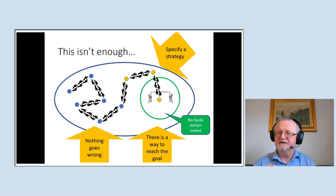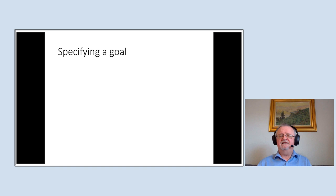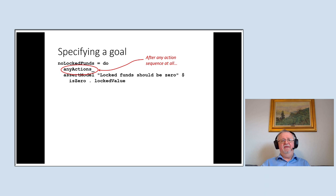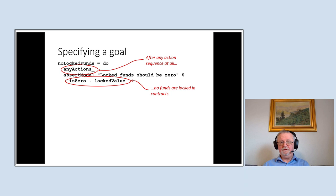Let me show what that looks like for the simple game contract. First, how do we specify a goal? Here's test code that says 'no funds remain locked forever': first, do any sequence of actions at all — the blue sequence on the diagram — and then after any sequence, we should be in the goal state, meaning the funds locked in the contract should be zero. This test is obviously not going to pass, because it's saying no matter what you do, you're in a goal state. That's certainly not true.